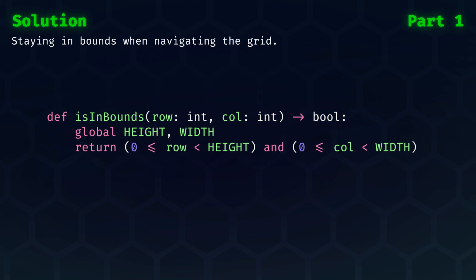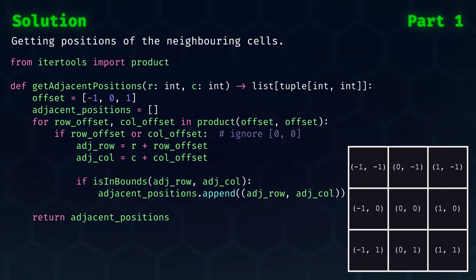But before we start flood filling, let's take a look at two sub-problems that are generally critical when working with navigating 2D grids. The first is to check if a particular row column pair is in the bounds of the grid. It makes no sense to check indices outside of the bounds of the grid.